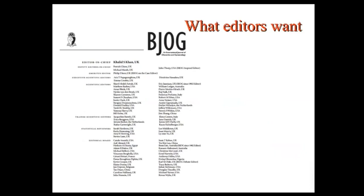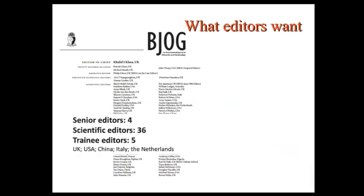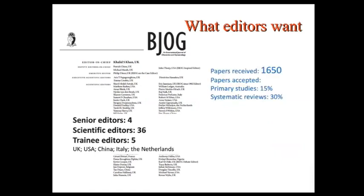As an example: when I was chief editor, our journal had more than 40 editors. We received 1,600 papers a year, 40-plus people assessed them, and we rejected 88 percent. This gives you an idea of what the author is up against.